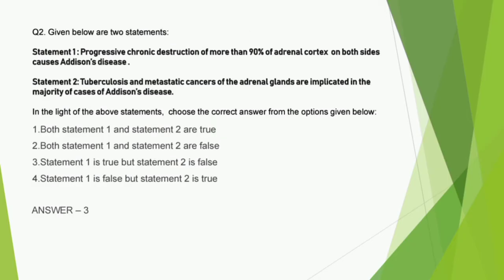Question number 2: Statement 1 says progressive chronic destruction of more than 90% of adrenal cortex on both sides causes Addison's disease, which is a true statement. Statement 2 says tuberculosis and metastatic cancers of the adrenal glands are implicated in the majority of cases of Addison's disease, which is actually a wrong statement. Tuberculosis adrenalitis and autoimmune adrenalitis are the two major causes. Tuberculosis is correct but metastatic cancers is not a major cause. The correct answer is option 3 - statement 1 is true but statement 2 is false.